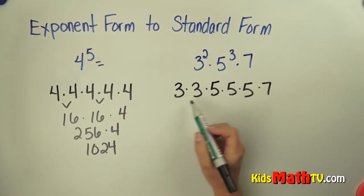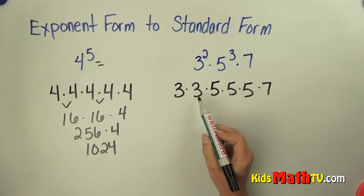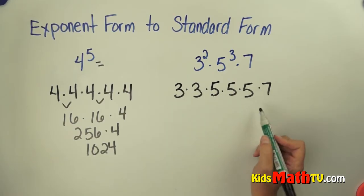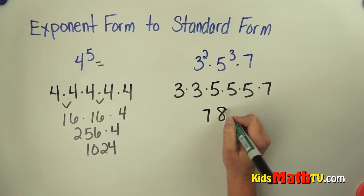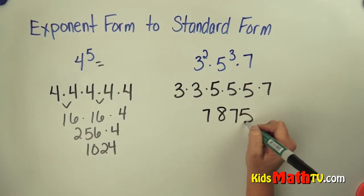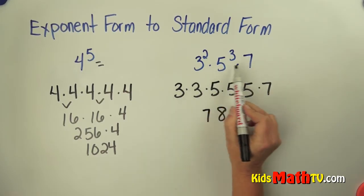And if you do all of that, multiplying out 3 times 3 times 5 times 5 times 5 times 7, you get an answer or a standard form of 7,875. So this is the exponent form.